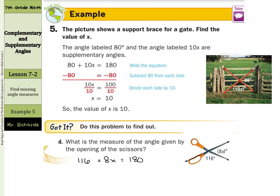Then, if we subtract the 116 from both sides, we are left with 8x equals 64. Then, when we divide by 8 on both sides, we end up with a solution of x equals 8, as 64 divided by 8 is 8.